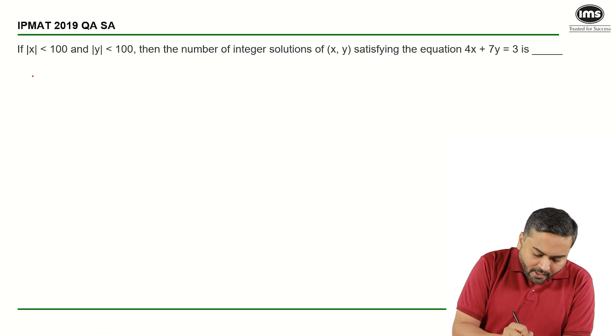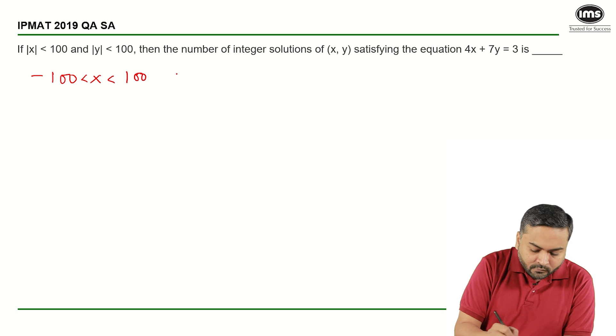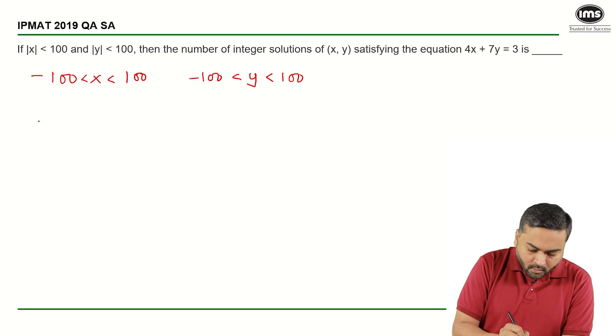So, x can take all the values from minus 100 to plus 100 and similarly, y can take all the values from minus 100 to plus 100. We have equation 4x plus 7y is equal to 3.